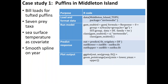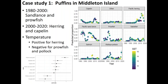If we plot with GGplot and bring in a sea surface temperature covariate, we can see that in the 80s through the 2000s there was an alternation between Pacific sand lance and prowfish as dominant prey. Then in the 2000s through 2020, there's an alternation between Pacific herring and capelin, where herring typically had a higher proportion in warm years whereas capelin was more prominent in cold years. Fitting the temperature response for each prey, herring shows a significantly positive interaction for temperature. The model identifies this significant effect where the alternation between capelin and herring is attributed to annual temperatures near Middleton Island.